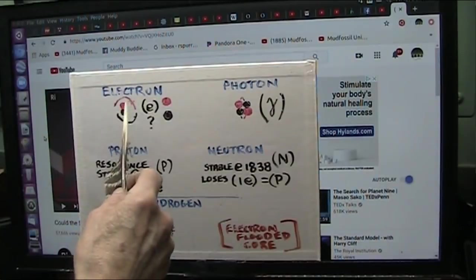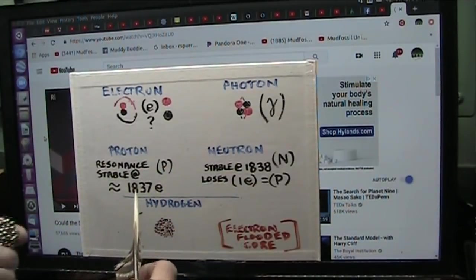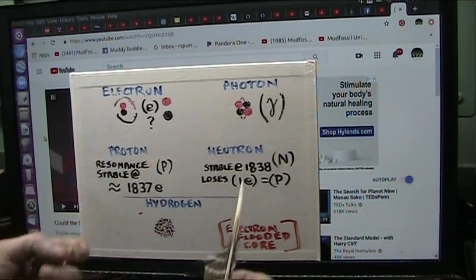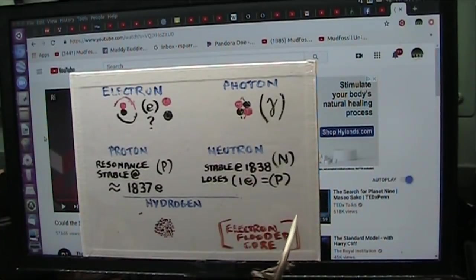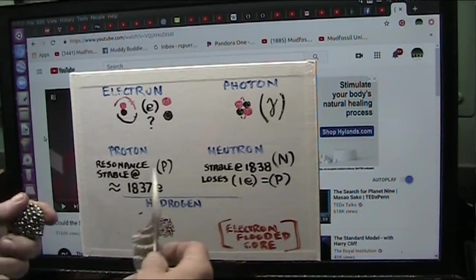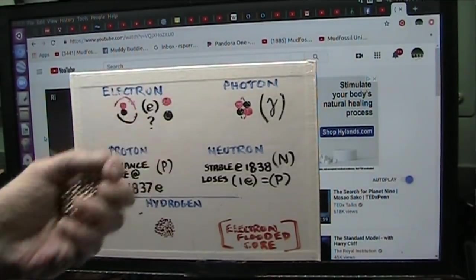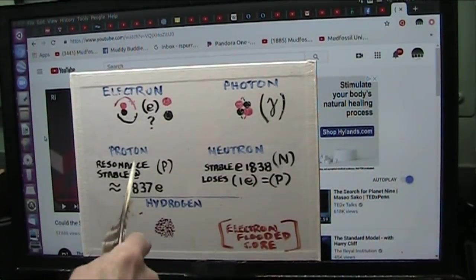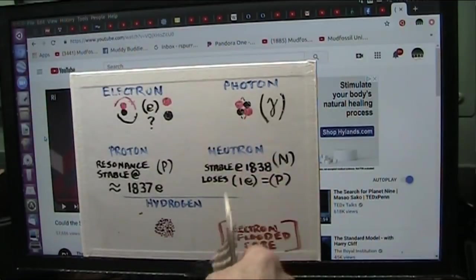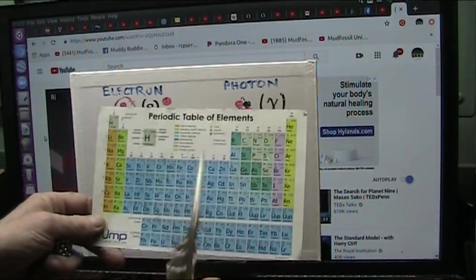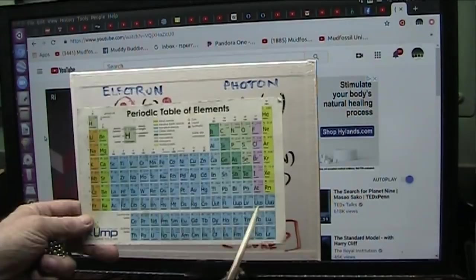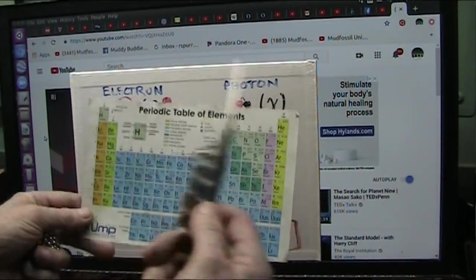Protons are nothing more than a ton of electrons added together, 1837 of them. A neutron is like 1838, but you can call them whatever you want. They're really only numbers that create stability, and those numbers are not every 1837. They're all over the ballpark. There's thousands of different isotopes.